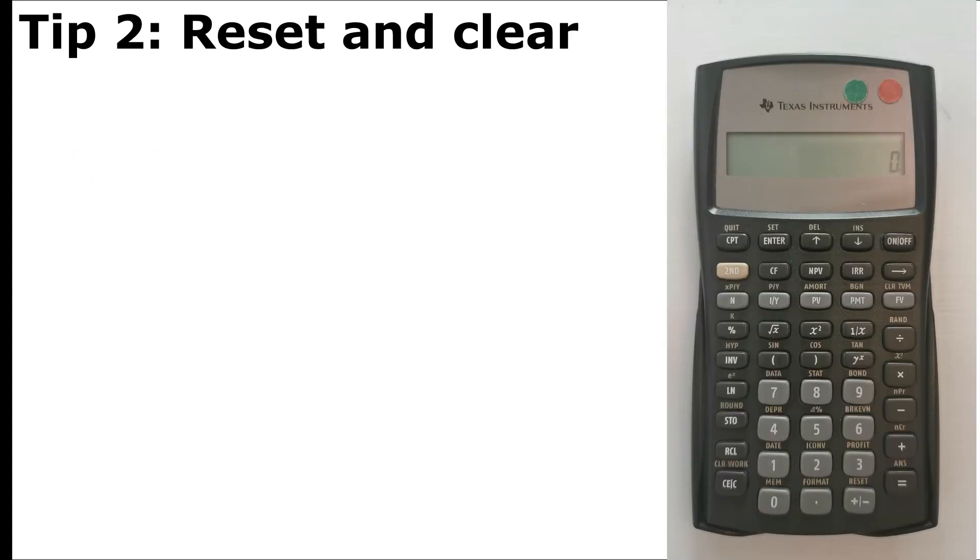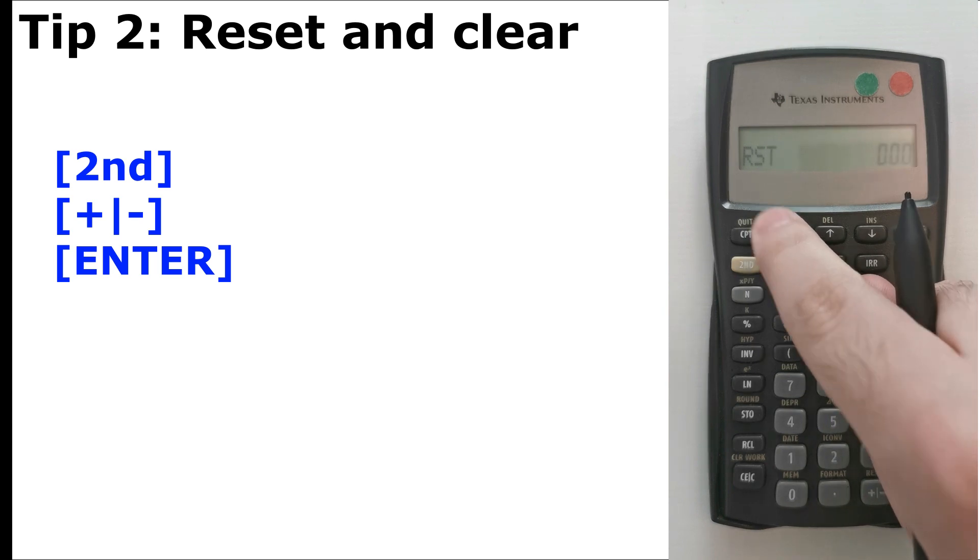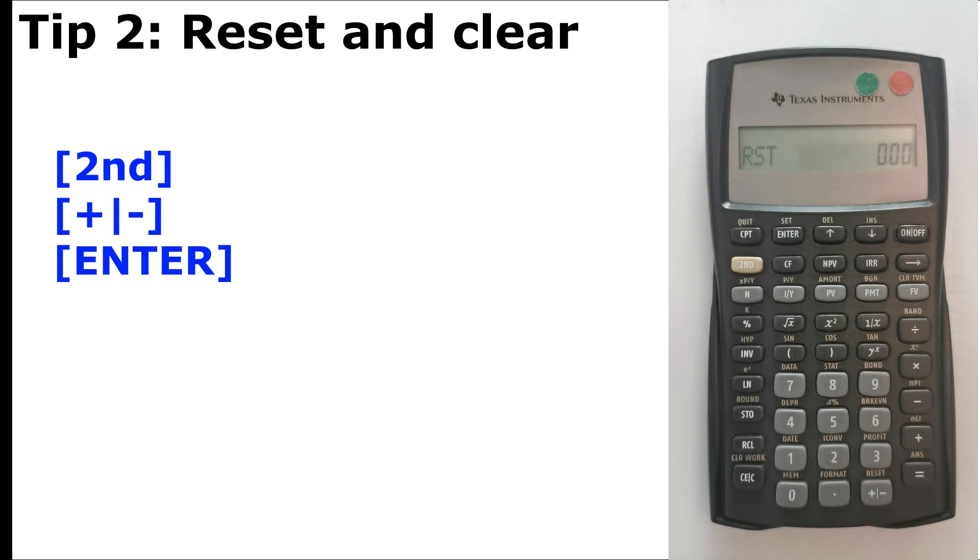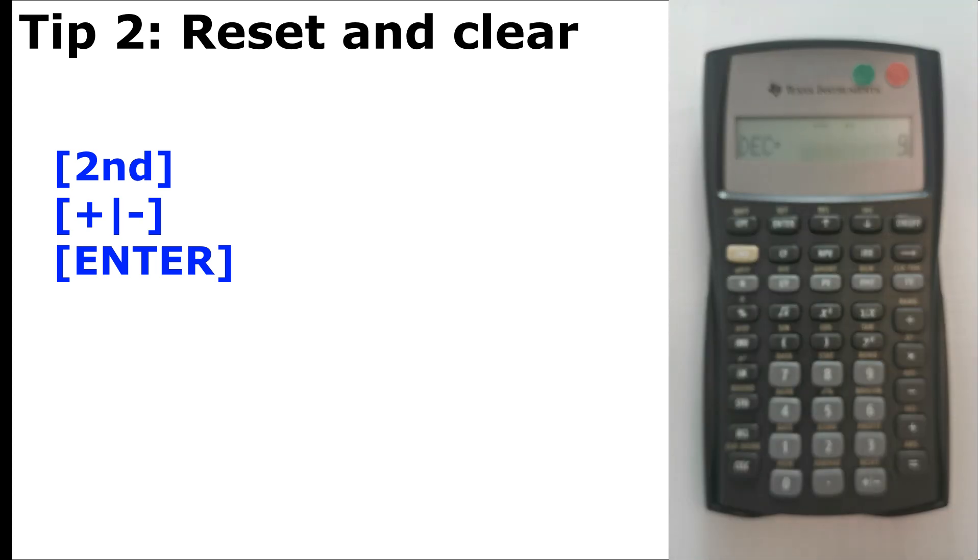For my second tip, it's how to reset and clear the calculator. It's an important function because the calculator in general will memorize all the numbers that we input. So it is important to clear all the info before we start a new problem. For the reset function, what we do is we press second, then reset which is plus or minus, then it asks us, we say yes, enter. So now we reset the calculator back to the original function. Now we change the decimal format: second, format, 9, enter.